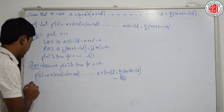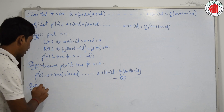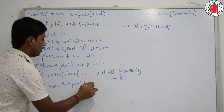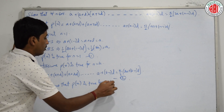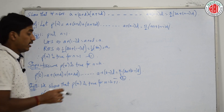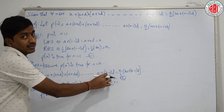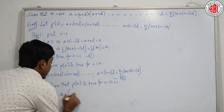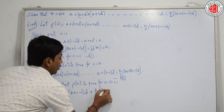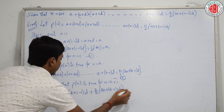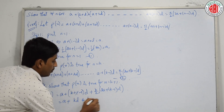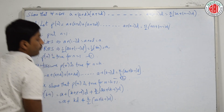Step 3: we show that P(n) is true for n equal to k plus 1. P(k+1) equals P(k) plus the (k+1)th term. The (k+1)th term is A + (k+1−1)·D = A + kD. So we have k/2 · (2A + (k−1)D) plus (A + kD).